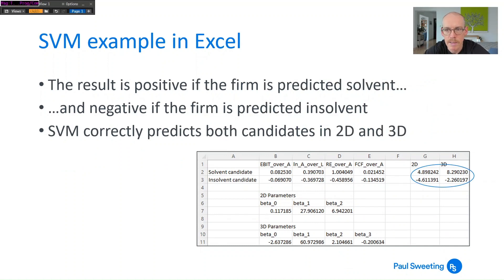And if we do that - I mean this is something which I've done for two dimensions and three dimensions for these two - we can find that the solvent candidate has values which are much greater than 1 in both cases, the insolvent candidate is much less than minus 1 in both cases. So we can see that both of those candidates fall very clearly on the right side of the margins to predict whether they are solvent or insolvent.